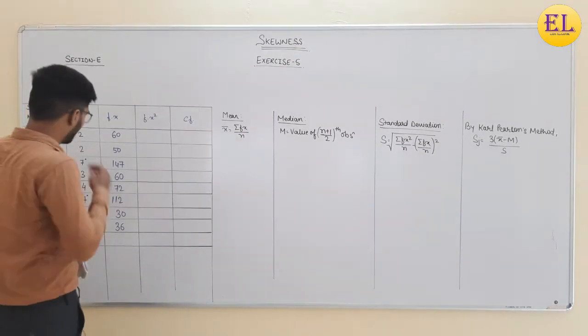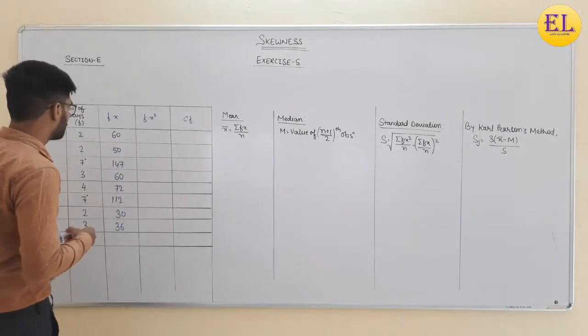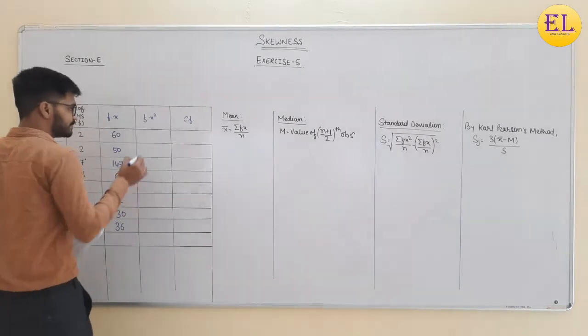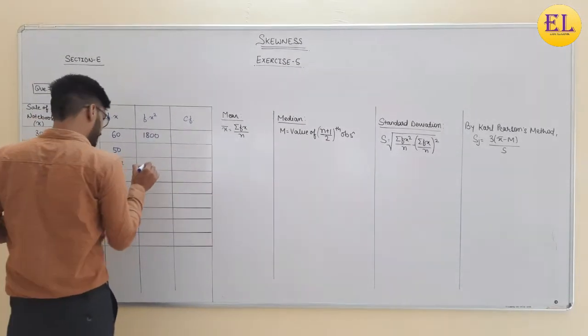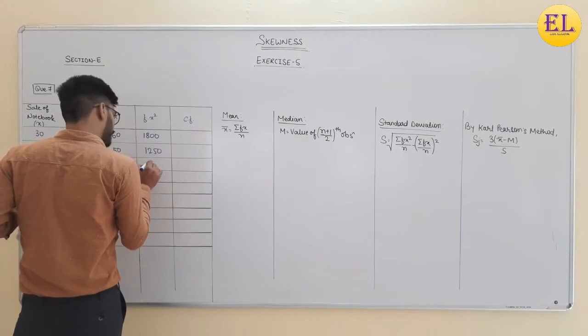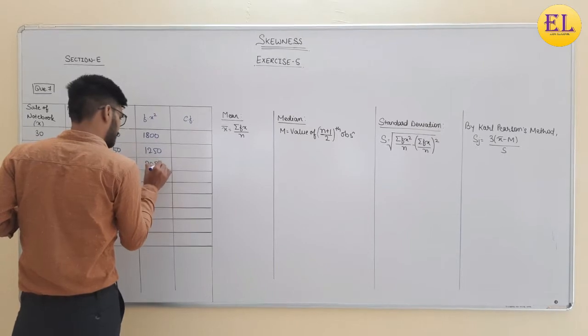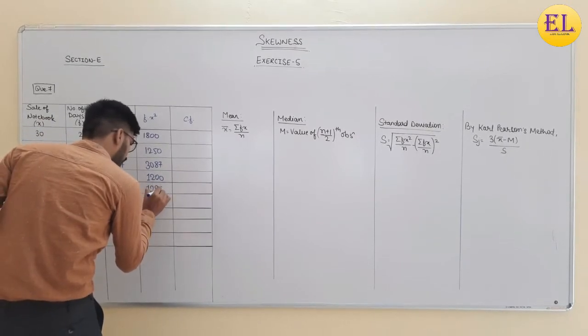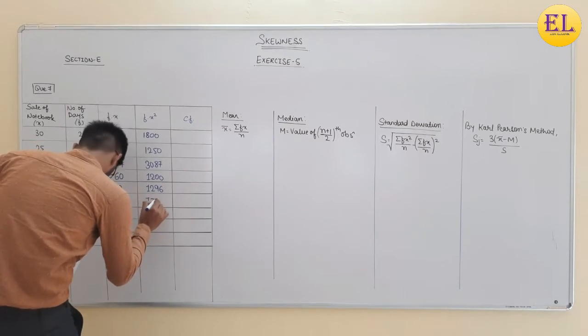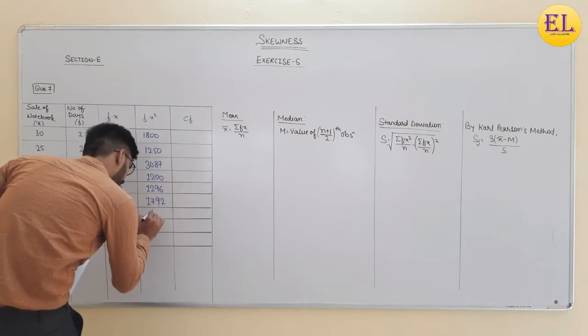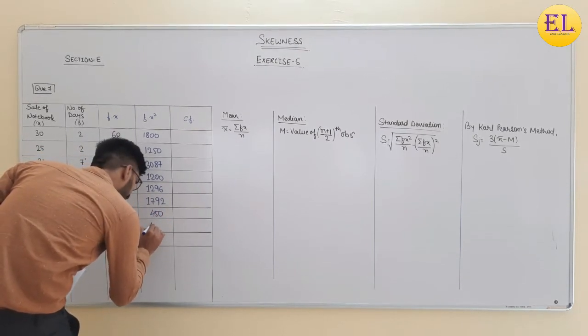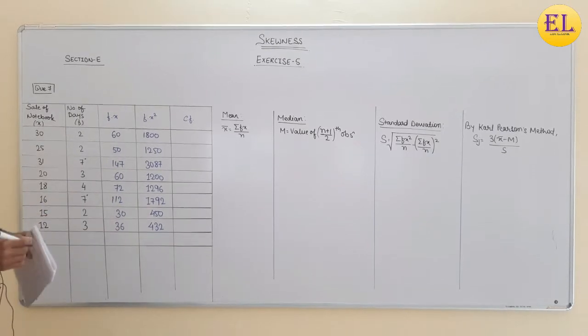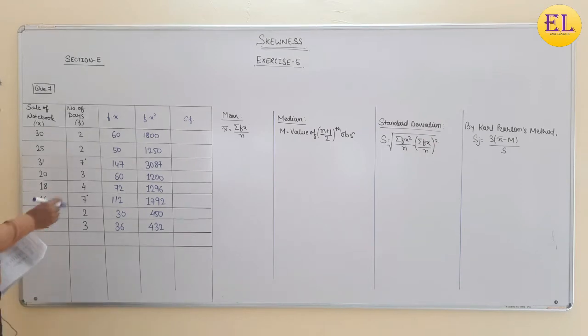Now fx squared, that is fx into x. The values are 1800, 1250, 3087, 1200, 1296, 1792, 450, 432. Now, as we know, to find median, we require cumulative frequency. So we will find cumulative frequency.